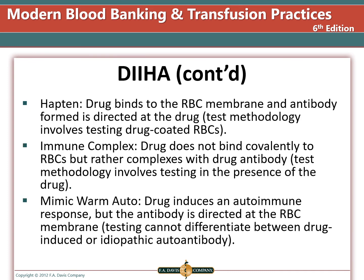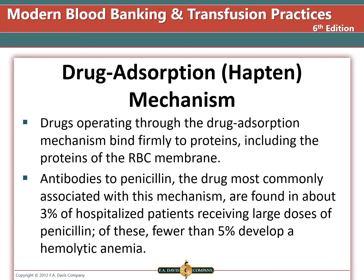In the hapten mechanism, the drug binds to the red blood cell and the antibody formed is directed at the drug; test methodology involves testing drug-coated red blood cells. In the immune complex mechanism, the drug does not bind covalently to red blood cells but complexes with the drug antibody; testing is performed in the presence of the drug. In the mimic warm auto mechanism, the drug induces an autoimmune response but the antibody is directed at the red cell membrane; testing cannot differentiate between drug-induced or idiopathic autoantibody. It is important to remember that more than one of these mechanisms may be active at the same time.